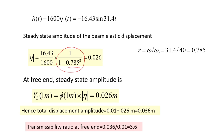The total displacement amplitude is y₀ + Yb(l) = 0.01 + 0.026 = 0.036 m. Hence, the transmissibility ratio at the free end is 0.036/0.01 = 3.6. Since ω/ωₙ = 0.785 < √2, amplification of displacement occurs. If the frequency ratio were greater than √2, reduction of base motion at the main mass would occur.